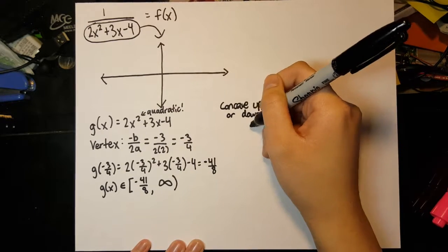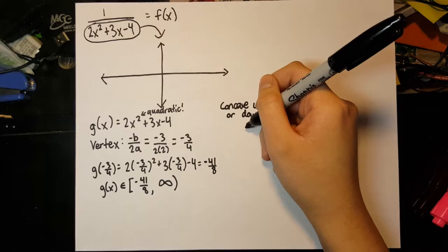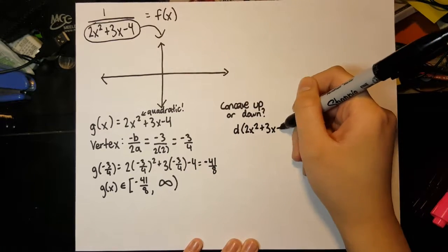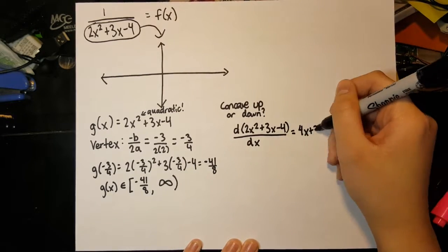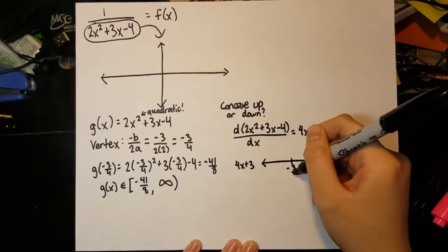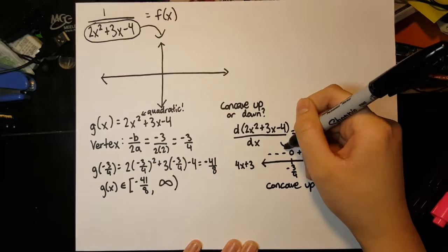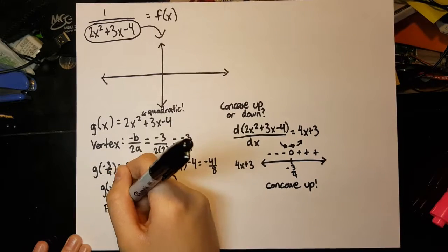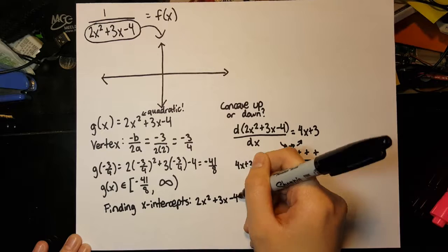Using the quadratic formula, we can locate the x-intercepts of this graph to be at negative three-fourths plus or minus square root of 41, over 4. Dividing 1 over this quadratic, we expect that when x equals these values, there will be a vertical asymptote where y diverges to positive and negative infinity, because our denominator will equal 0.